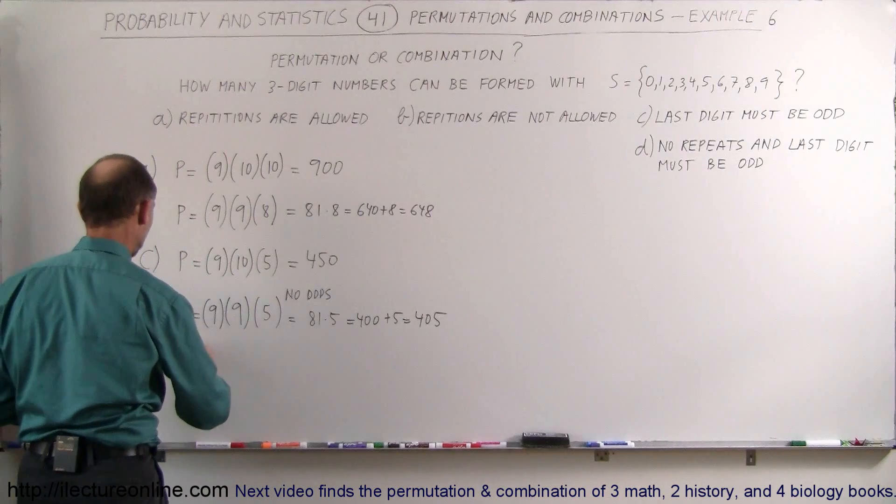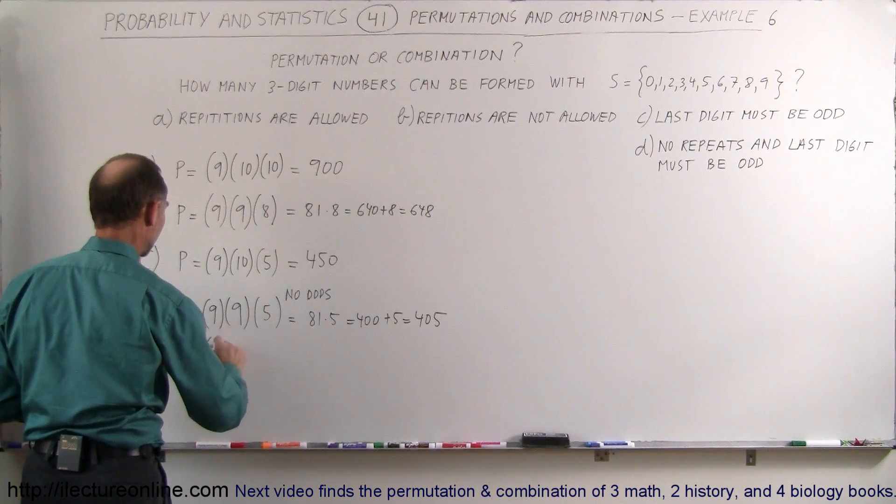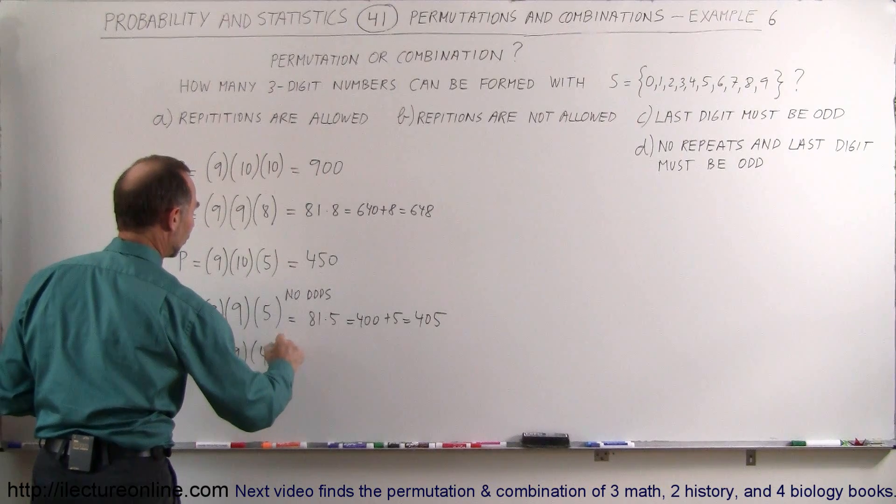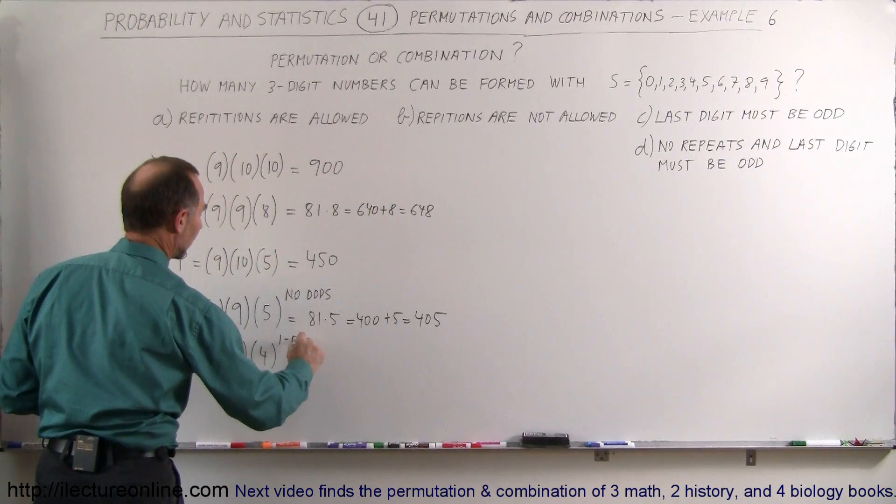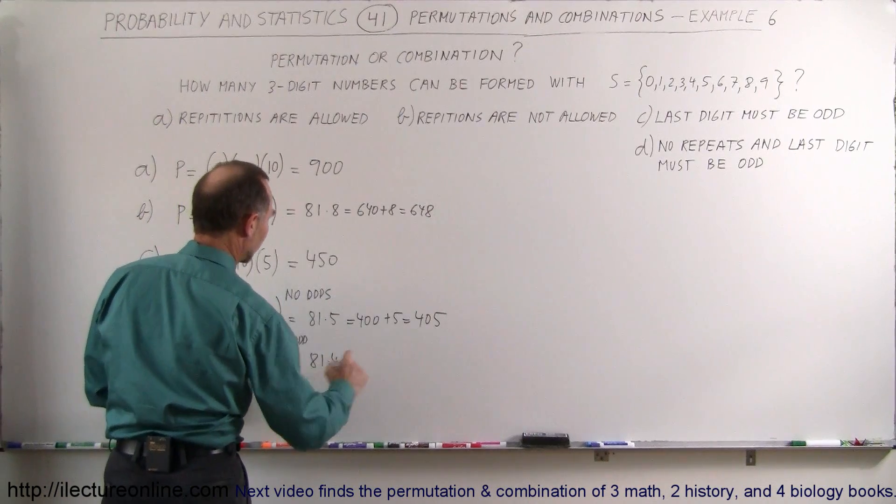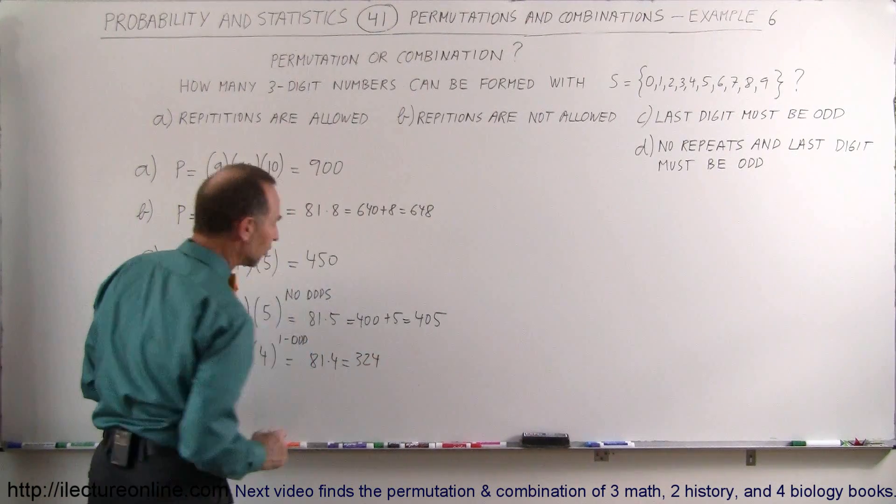But what if one of the first ones was an odd? So we have 9 possibilities there, 9 possibilities there, but now you only have 4 possibilities if one odd was picked before. So in this case, you're going to have 81 times 4, 4 times 8 is 320, that would be 324 permutations.